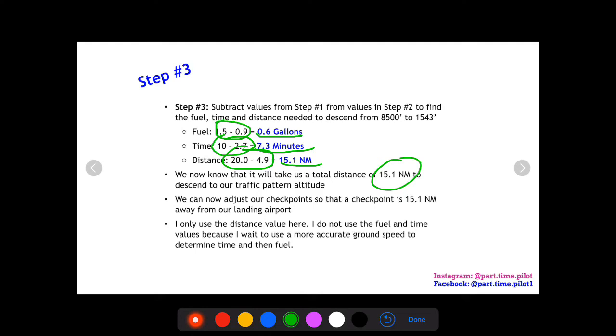We can now, just like we did in climb, adjust our checkpoints so that we have a checkpoint 15.1 nautical miles away from our final destination airport. This way, when we're flying, we can know when we reach that checkpoint that, hey, it's time to descend.